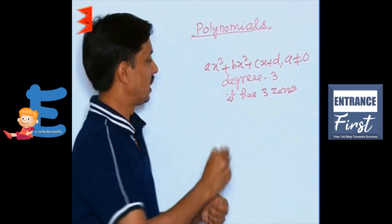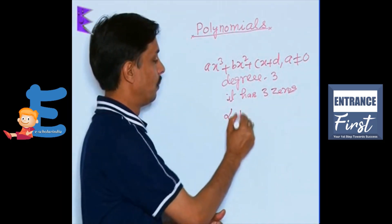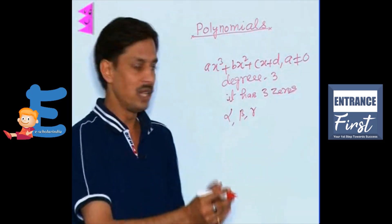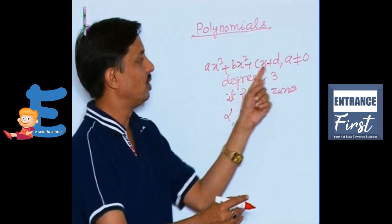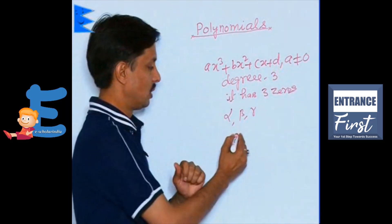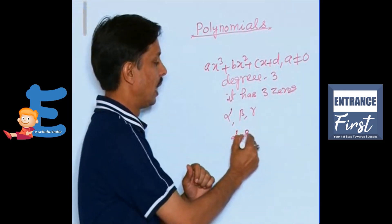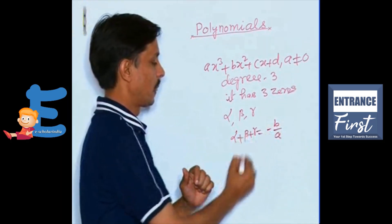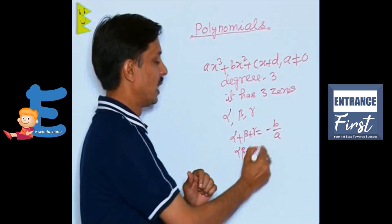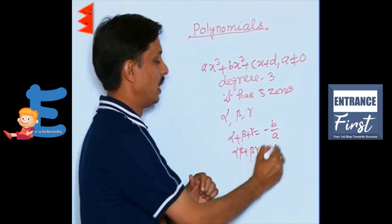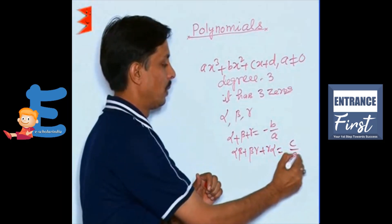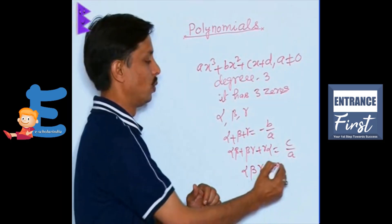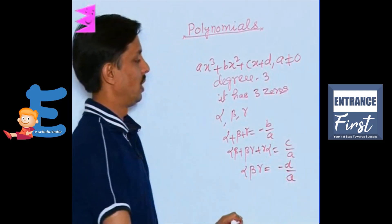I want to tell you if there are 3 zeros alpha, beta and symbolically gamma, what is the relation between 3 zeros and these coefficients? The 3 relations are: alpha plus beta plus gamma is minus B upon A. Then alpha into beta plus beta into gamma plus gamma into alpha is positive C upon A. Then third relation is alpha into beta into gamma is minus D upon A.